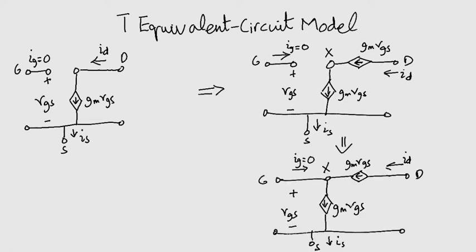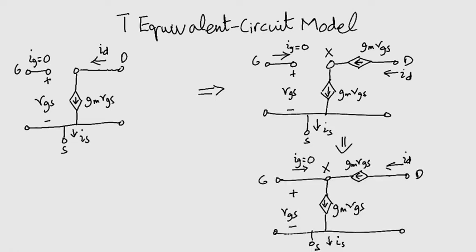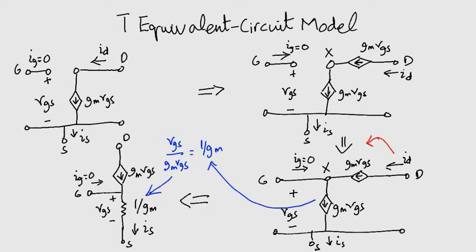Moving on, we can join the gate terminal to terminal X because IG equals zero. Now if we move the drain terminal upwards and replace the GMVGS by a resistance 1 over GM, we get the T equivalent circuit model.